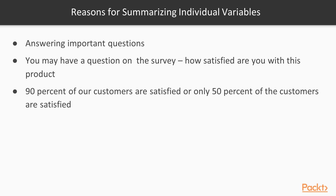The first reason why you want to summarize individual variables is that it can allow you to answer important questions. For example, you may have a question on a survey like, 'How satisfied are you with this product?' The answer to that question is going to be important — it would be important to know if 90% of our customers are satisfied with that product, or maybe only 50% are satisfied, in which case, as a company, we would be in bad shape. So that's the first reason: individual variables can answer really important questions.